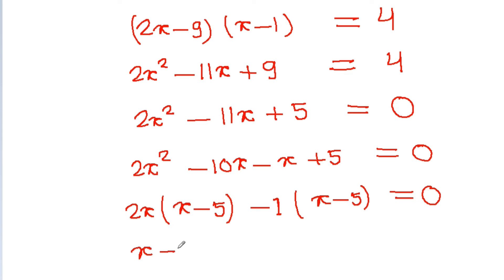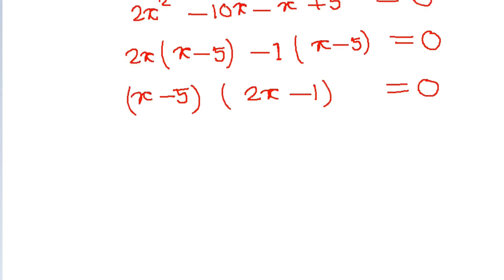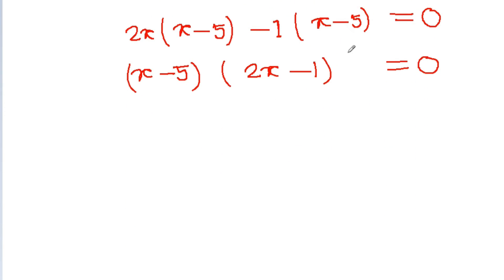Taking (x-5) as common, we get (x-5)(2x-1) equals 0. From x minus 5 equals 0, we get x equals 5. From 2x minus 1 equals 0, we get x equals 1/2.